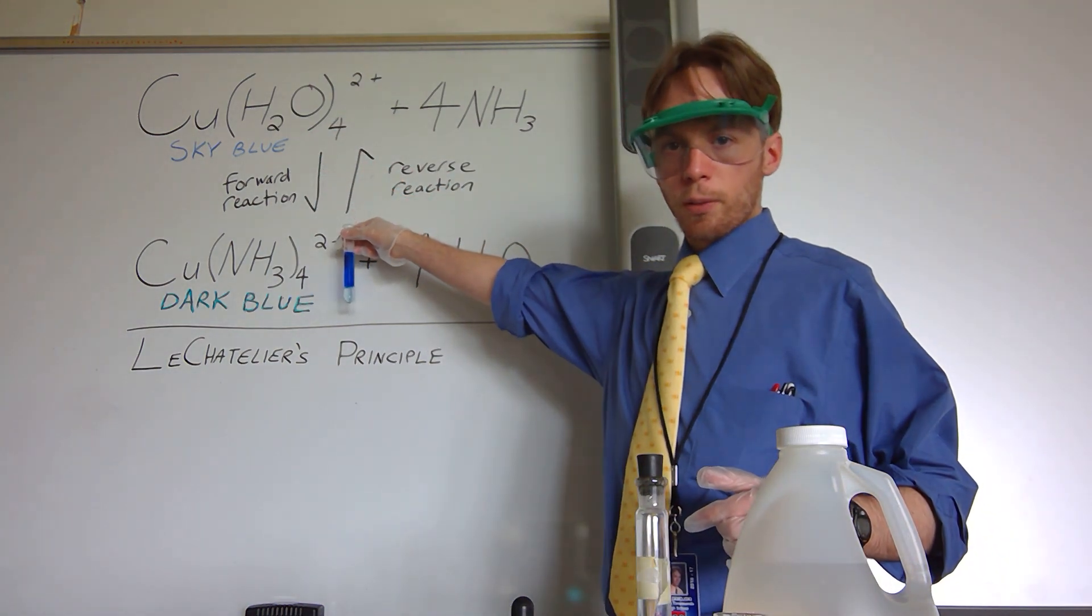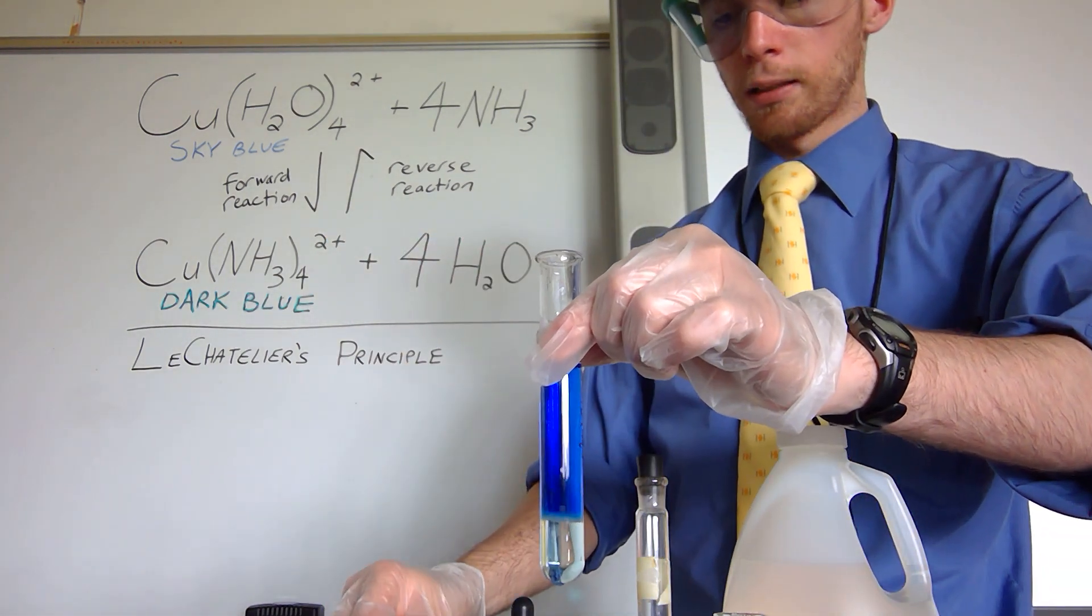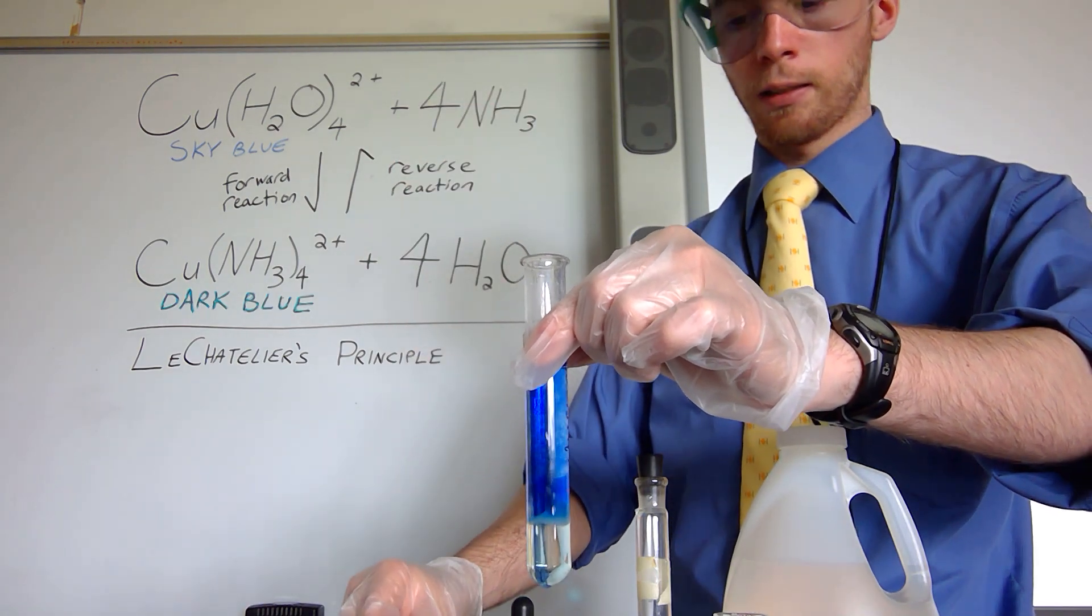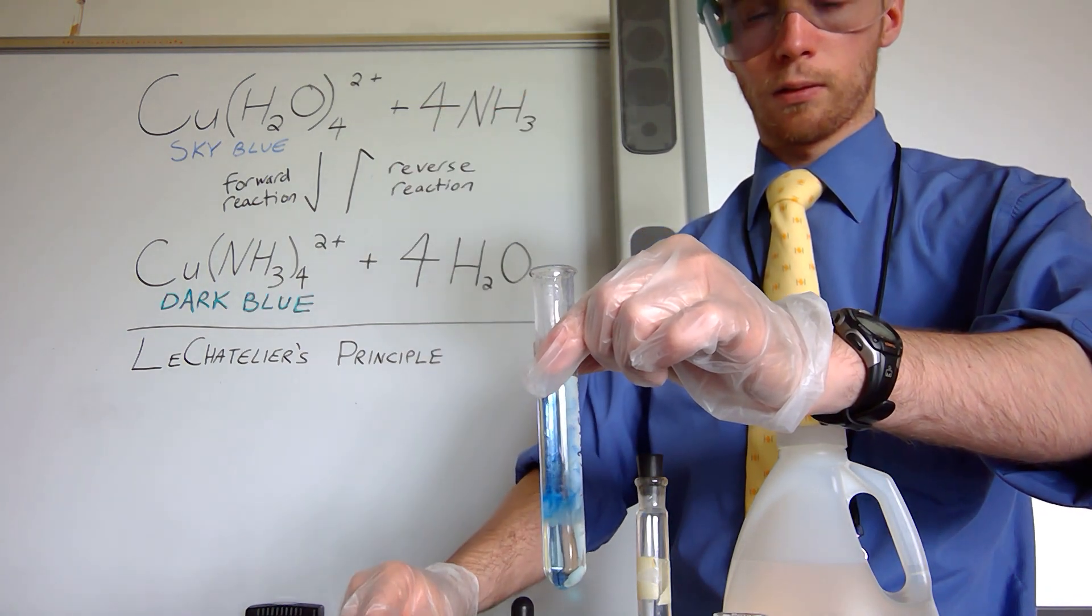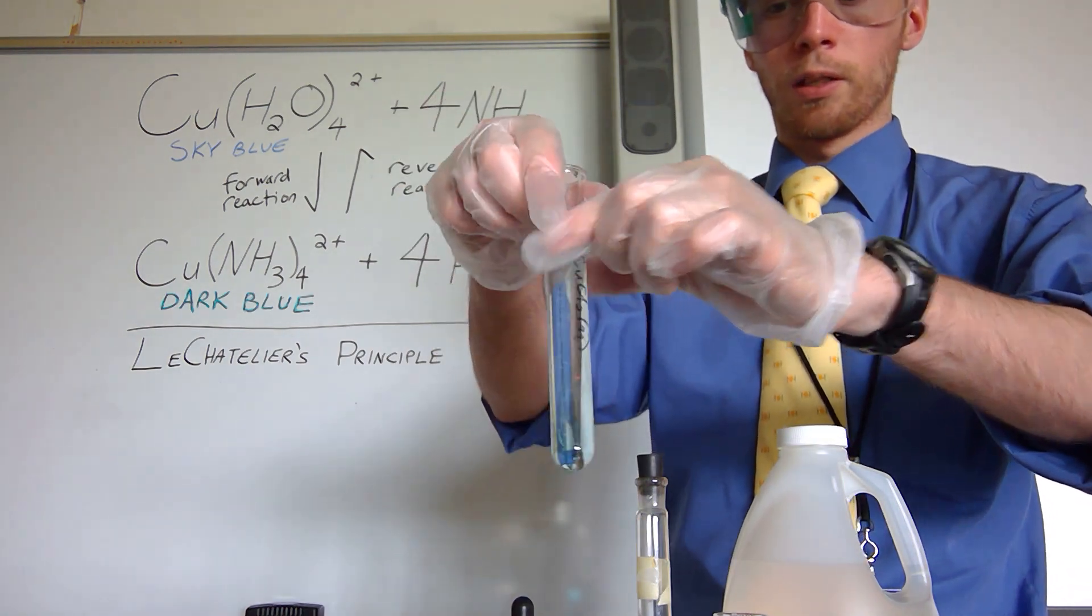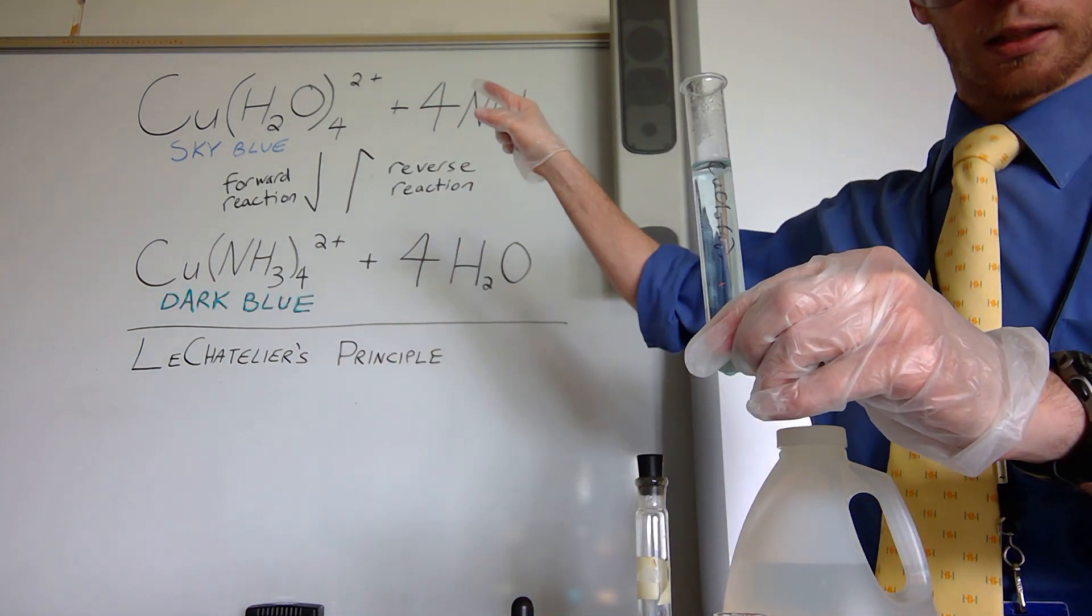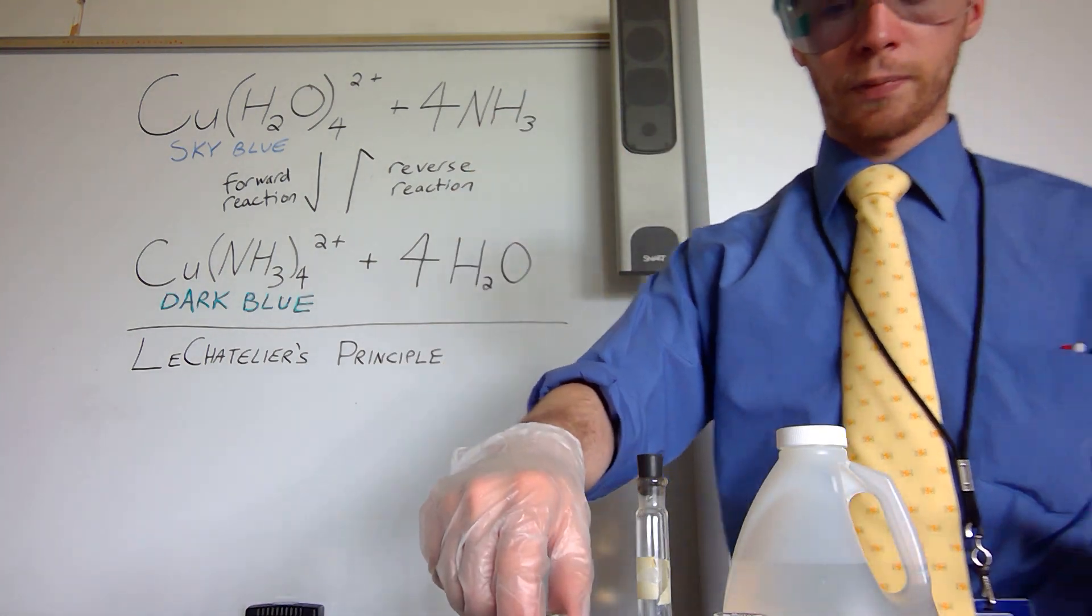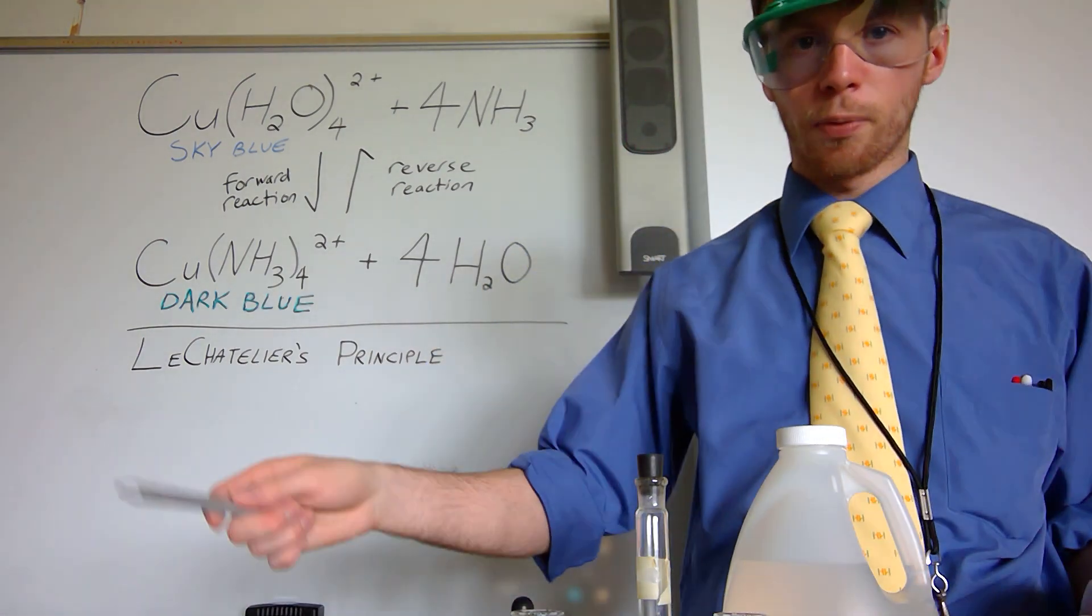And then we'll shift it back using our hydrochloric acid. We've shifted it back and forth, so just by changing a certain reactant or product in our equilibrium system we can shift between sky blue and dark blue to demonstrate equilibrium and a disruption to this equilibrium system. Okay, this has been a demonstration of Le Chatelier's principle using copper complexes.